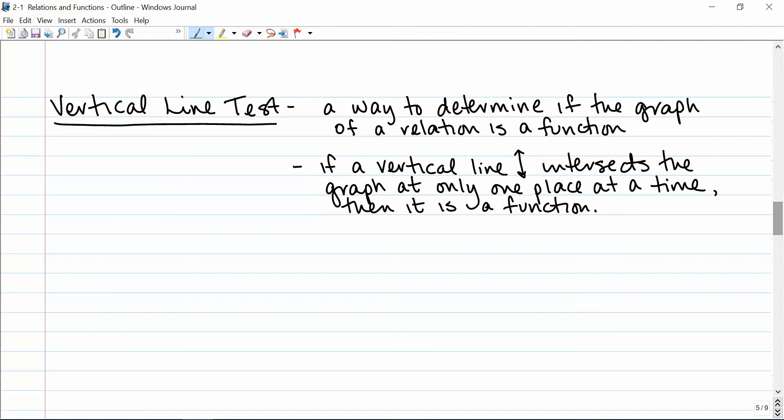And you'll recall this as well from Algebra 1, the vertical line test. It's a good way to determine if the graph of a relation is a function, and that is, if a vertical line intersects the graph at only one place at a time, then it is a function. If the vertical line intersects the graph at two places at the same time, then it is not a function.